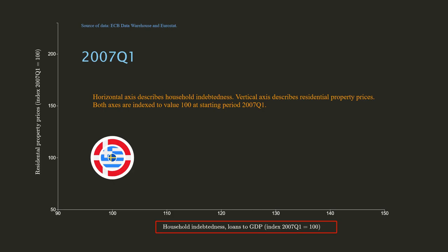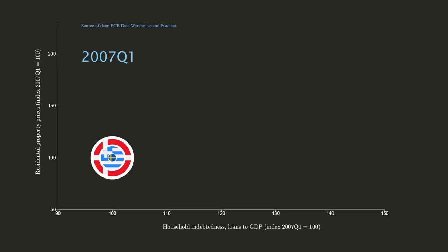In the visualization, the horizontal axis describes household indebtedness, measured as a ratio of household loans to gross domestic product. The vertical axis describes the residential property price index. Both axes are indexed to value 100 at the first quarter of 2007.